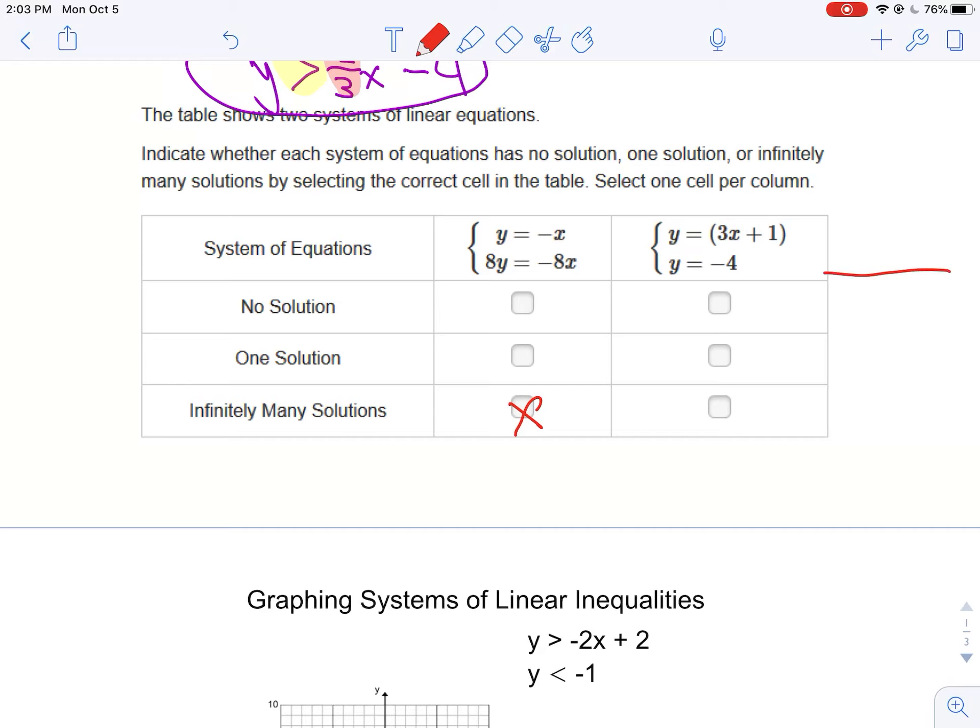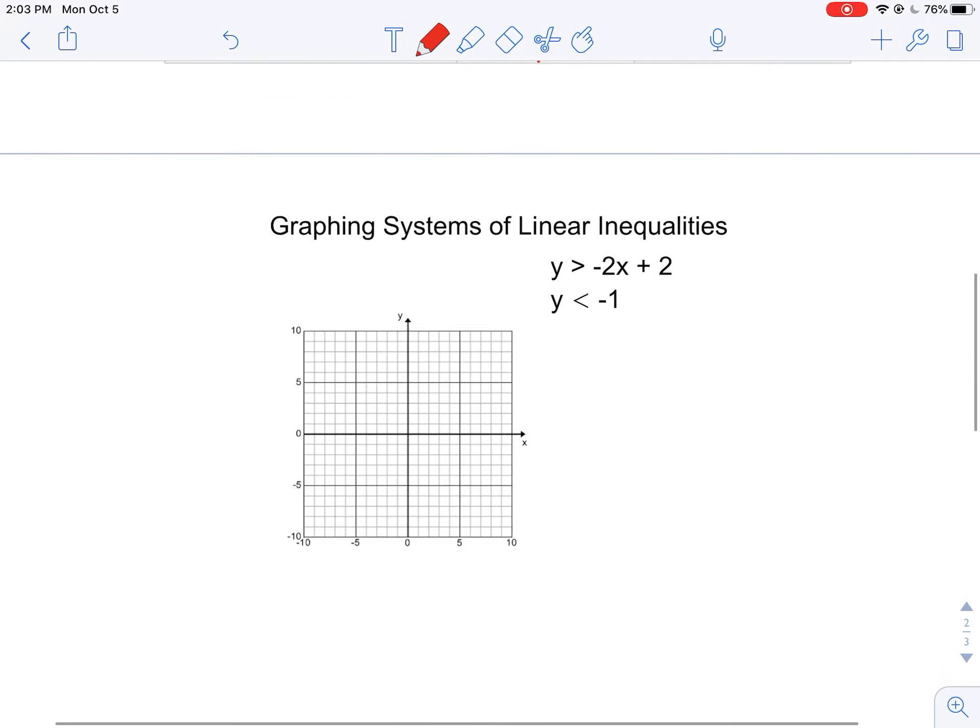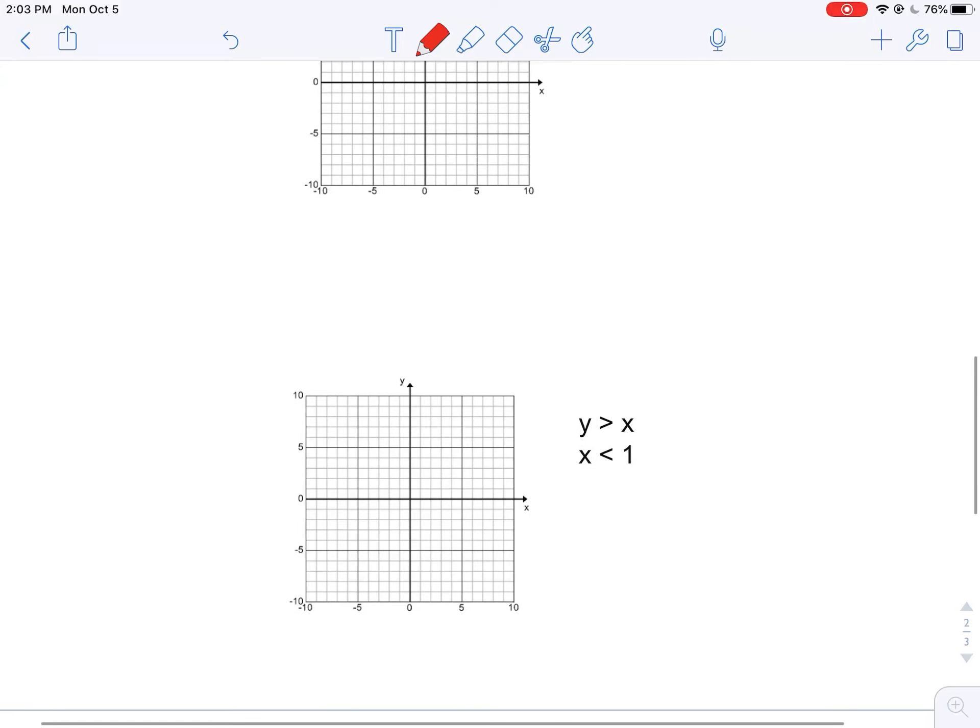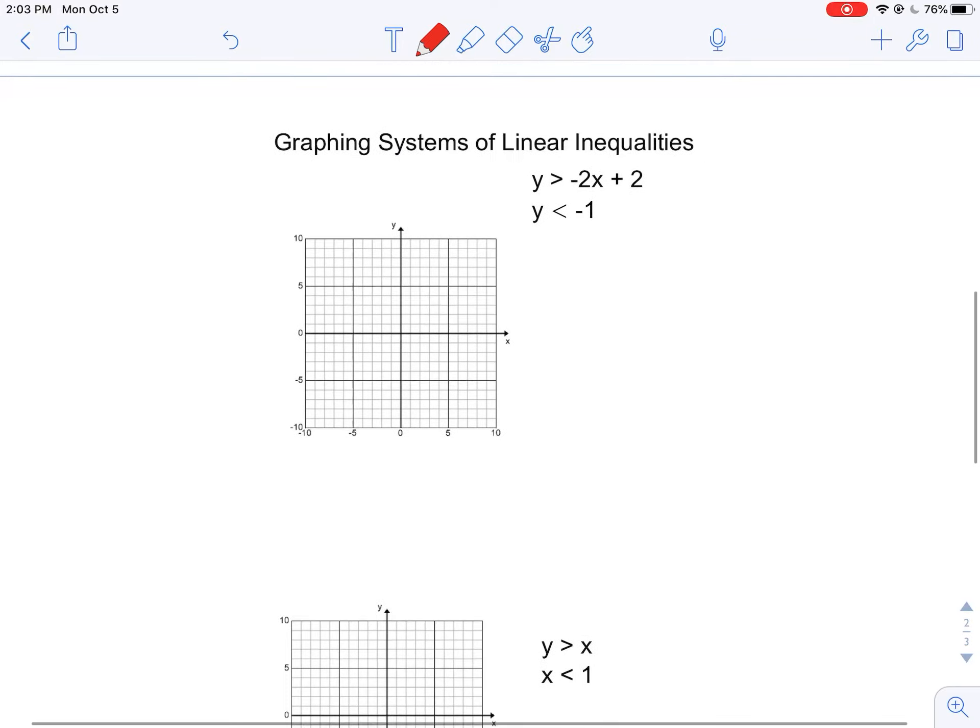And this one right here, y equals negative four, that's just going to be a horizontal line and 3x plus one is going to cross, it's just going to be one solution. So just in case you ever see something like that.